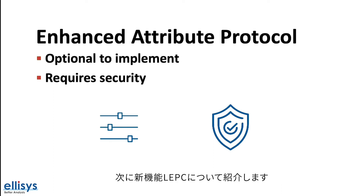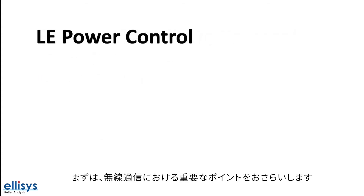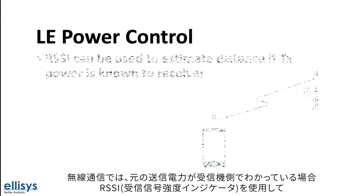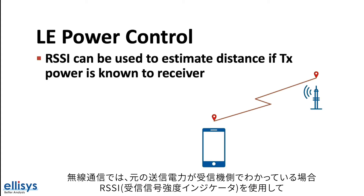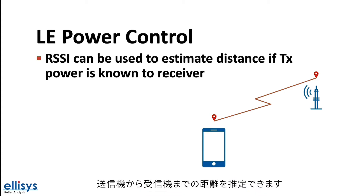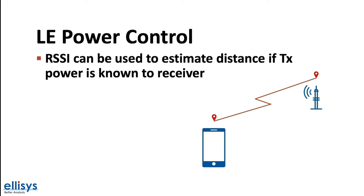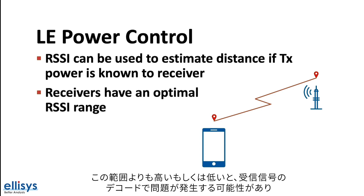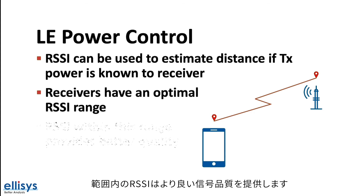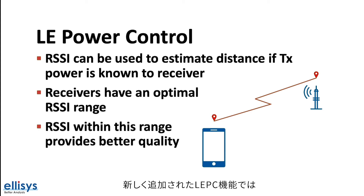The next new feature is called LE power control. In wireless communication, the received signal strength indicator or RSSI can be used to estimate the distance of the receiver from a transmitter if the original transmit power is known to the receiver. Wireless receivers have an optimal received signal strength range — higher or lower than this range may cause issues with decoding the received signal, so the RSSI within this range provides better signal quality.